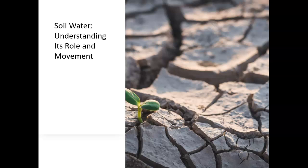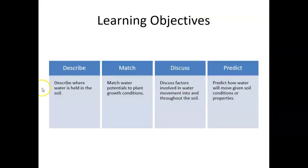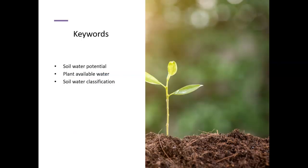In this presentation we're going to talk about soil water and understanding its role and movement through the soil. Our learning objectives are to describe where soil water is held, match water potentials to plant growth conditions, discuss factors involved in water movement into and throughout the soil, and predict how water will move given the conditions or properties. Key words for this section are soil water potential, plant available water, and soil water classification.